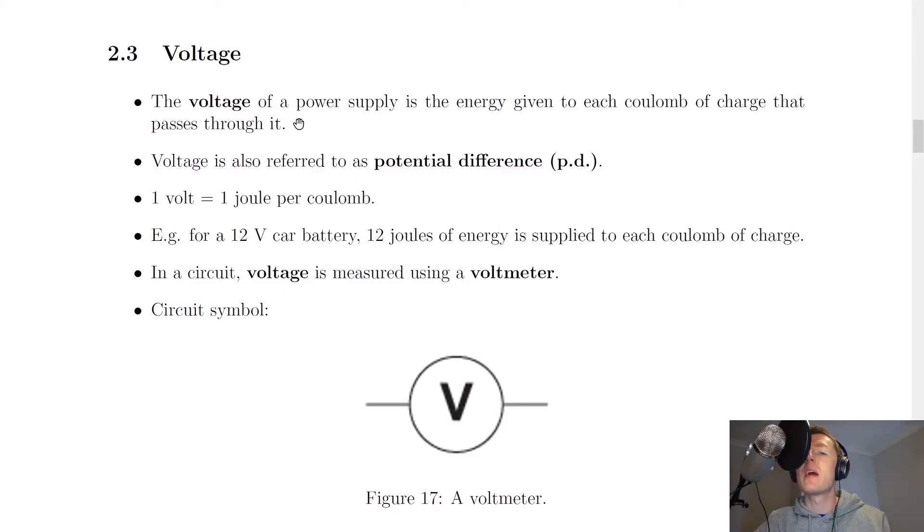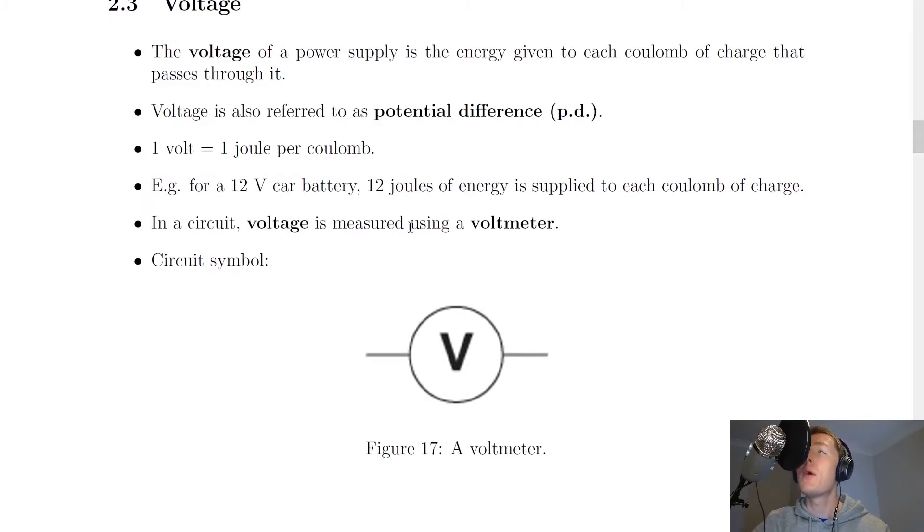Or in simpler terms, it's the energy per coulomb. Remember, that's because the power supply gives energy to the moving electrons, and these moving electrons together are called a charge. You should be aware that voltage is often referred to as potential difference, or sometimes shortened to PD.